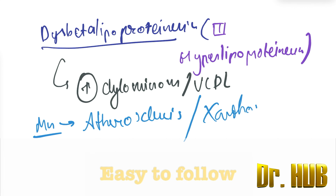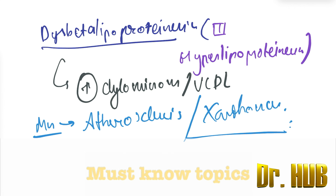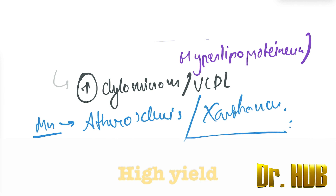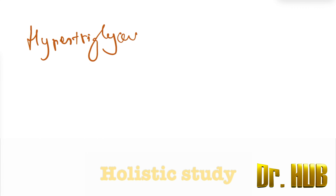The manifestations of disbetalipoproteinemia are similar to familial hypercholesterolemia — that is, atherosclerosis and xanthomas.